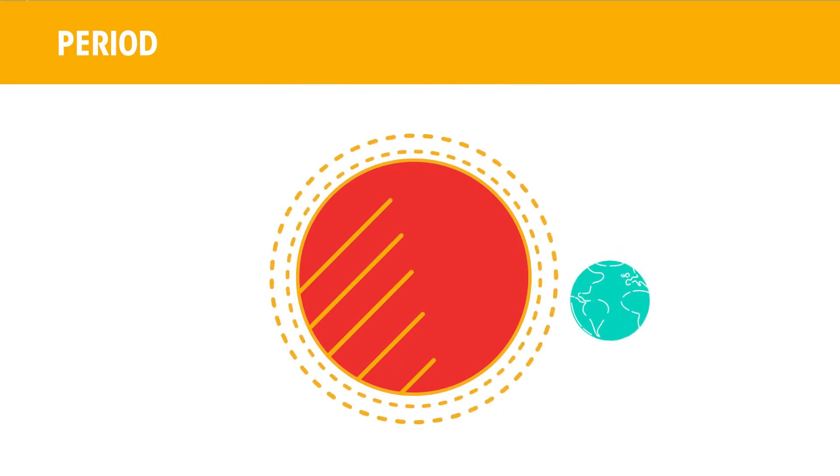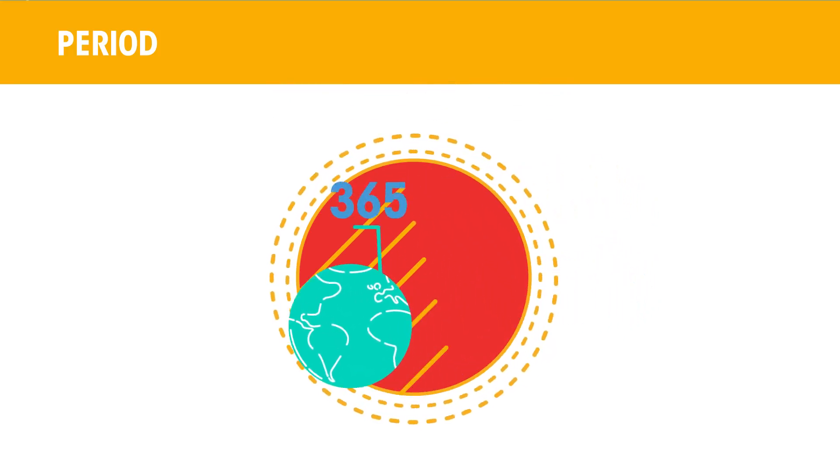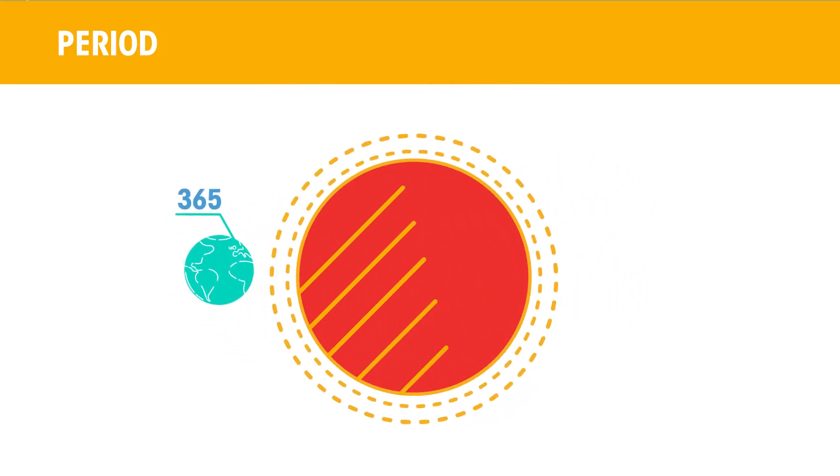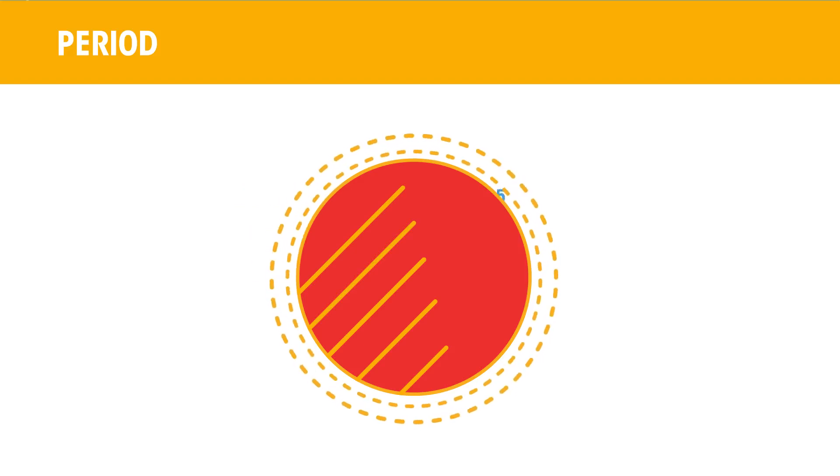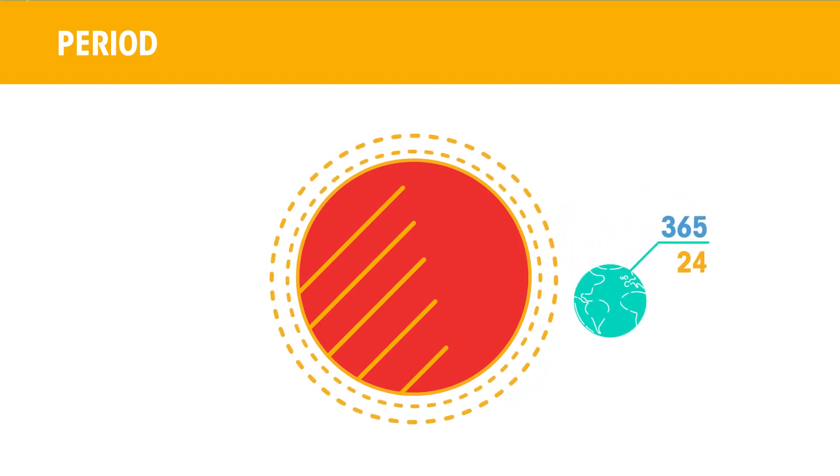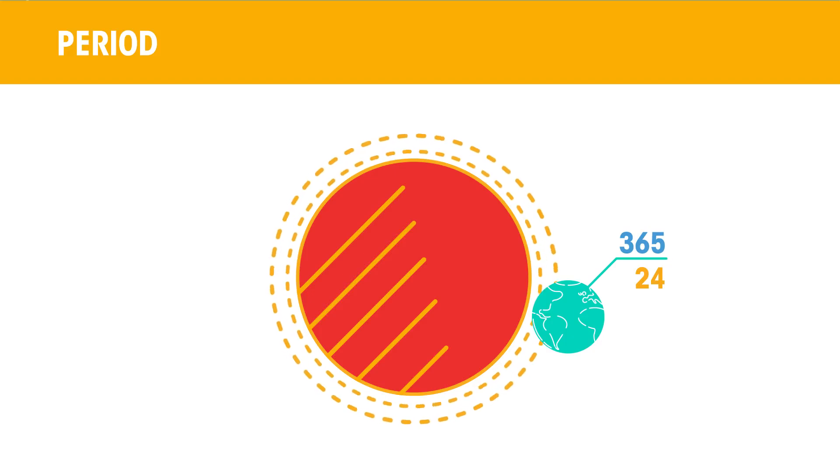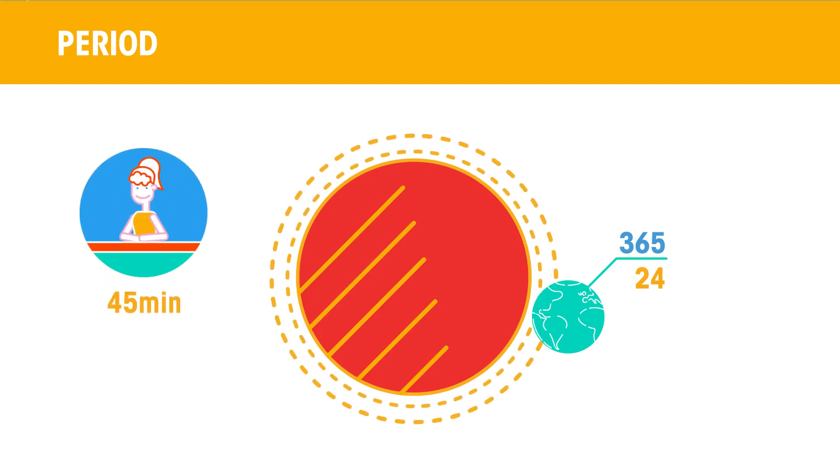When something happens repeatedly, we say that the event is periodic and refer to the time for the event to repeat itself. The period of the earth to orbit the sun is 365 days. The period of a day is 24 hours. The period of a typical class at school is 45 minutes.